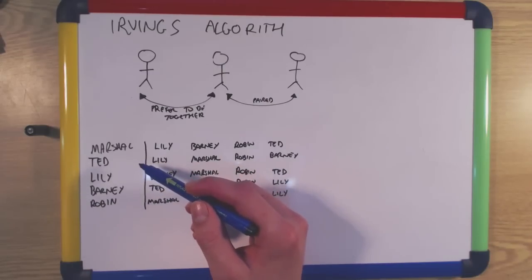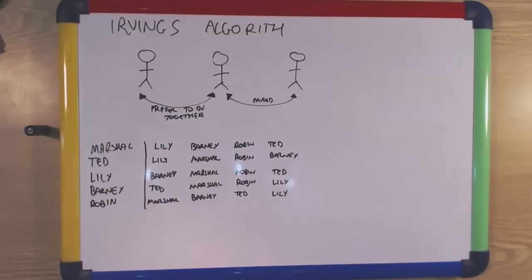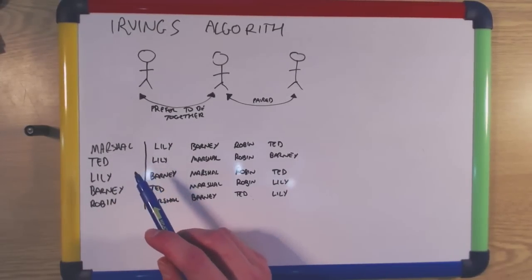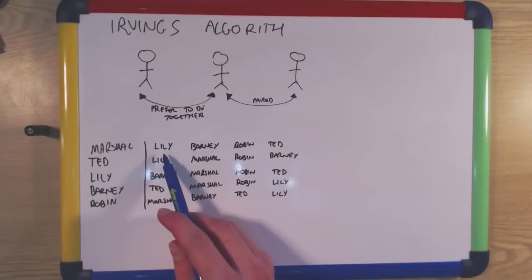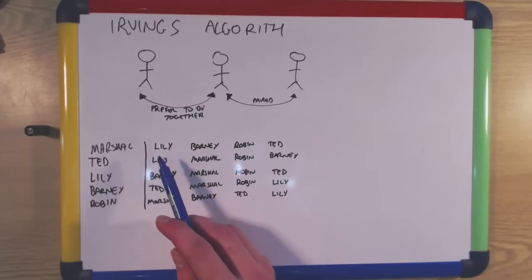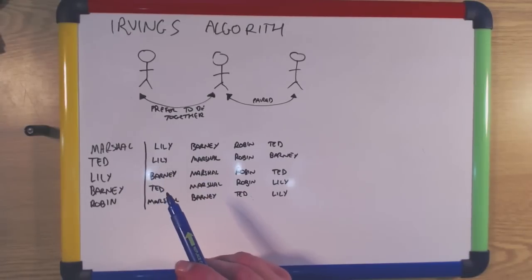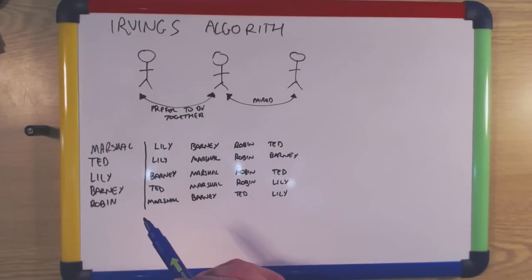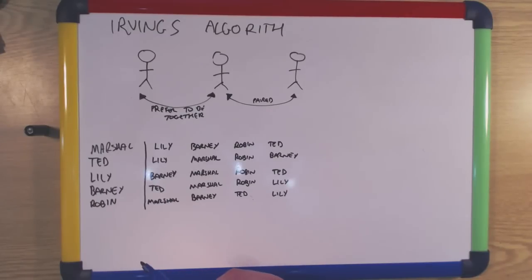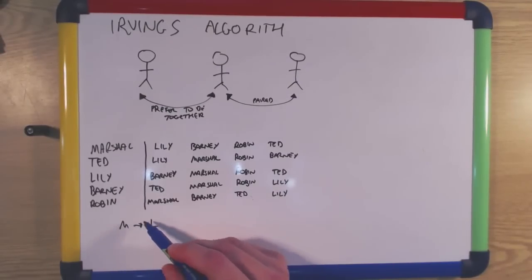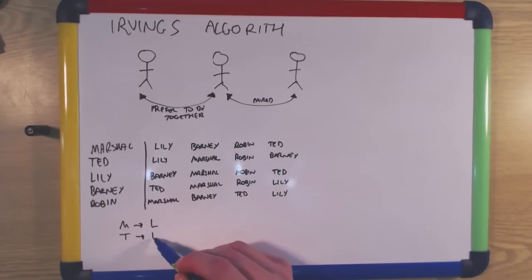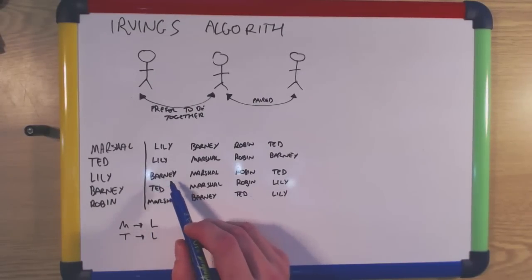In the first phase, for every person P who hasn't had a proposal accepted or all of them rejected, P proposes to the next most favourable person on their preference list that hasn't rejected them previously. If a receiver of a proposal has already accepted a proposal from someone else, she will accept the new proposer P if he is more preferable than the previous proposer, otherwise she will stay with the previous proposer. First, Marshall proposes to Lily and Lily accepts, as she has not been proposed to before.